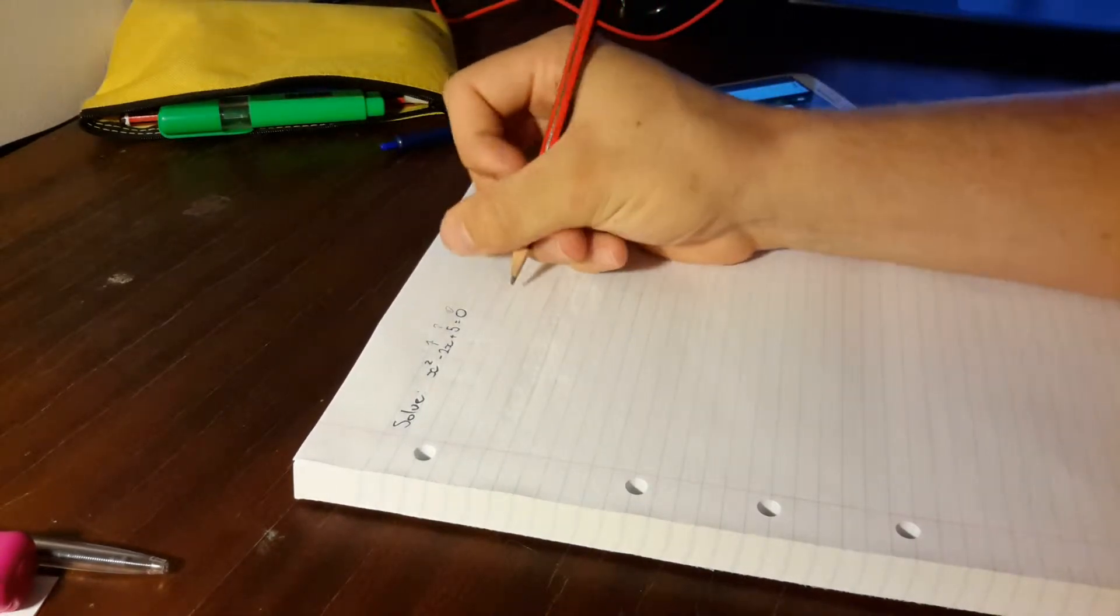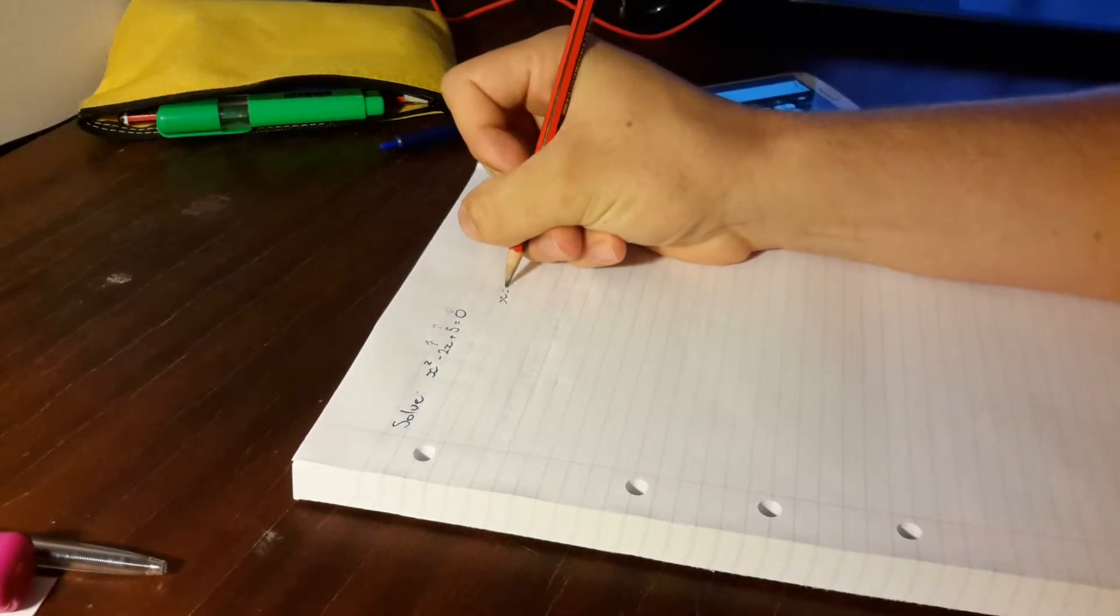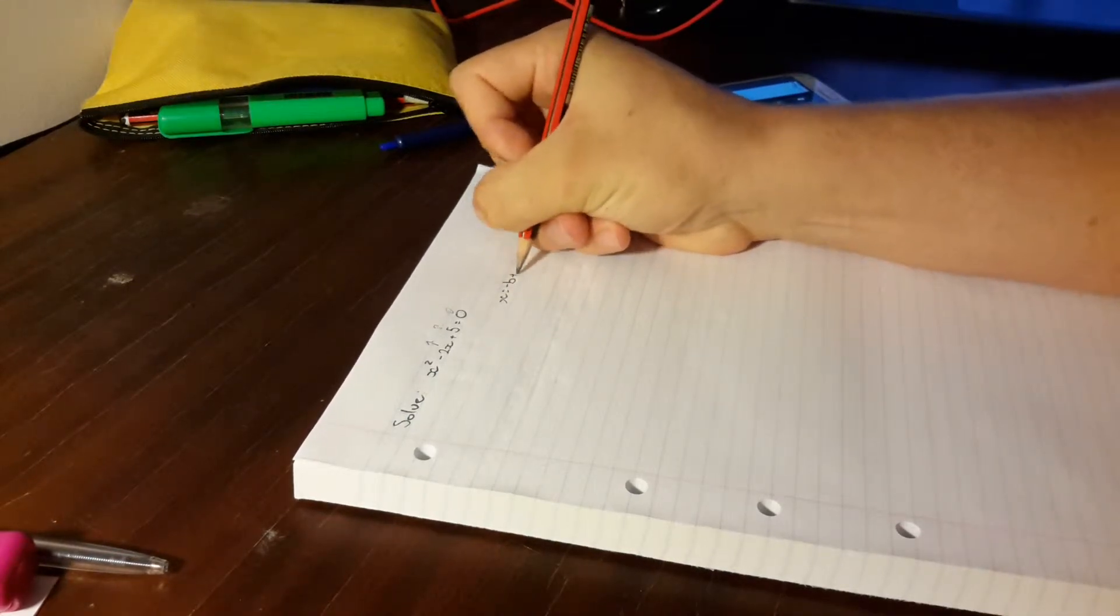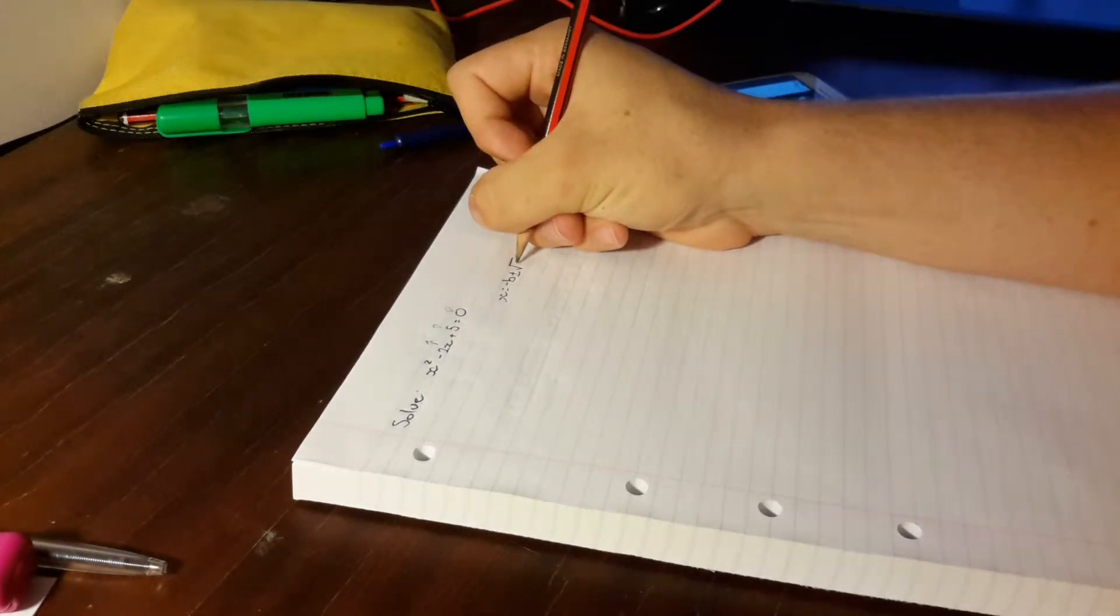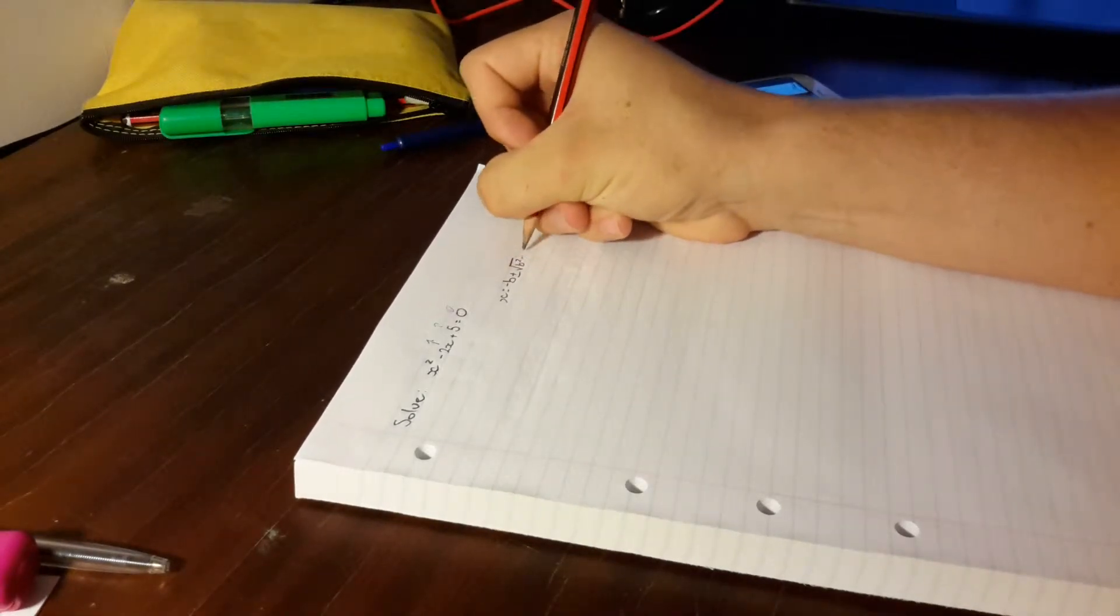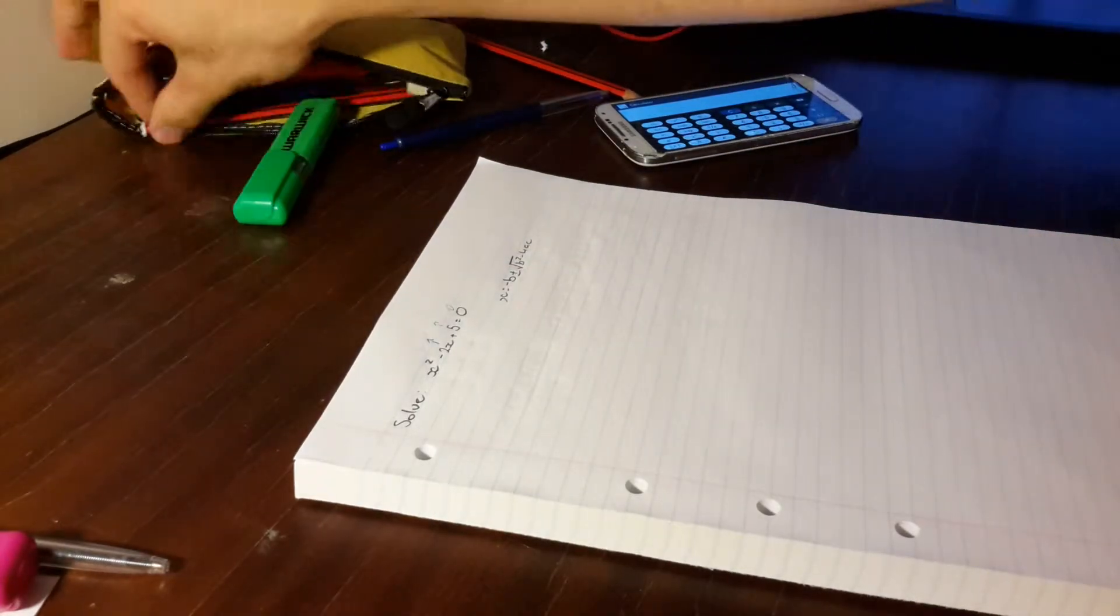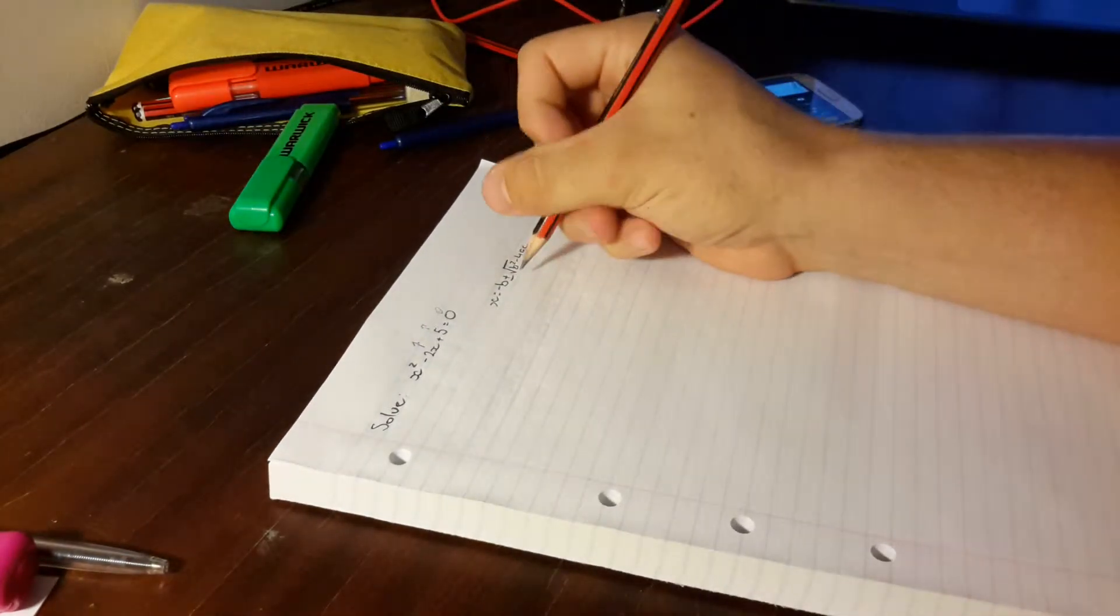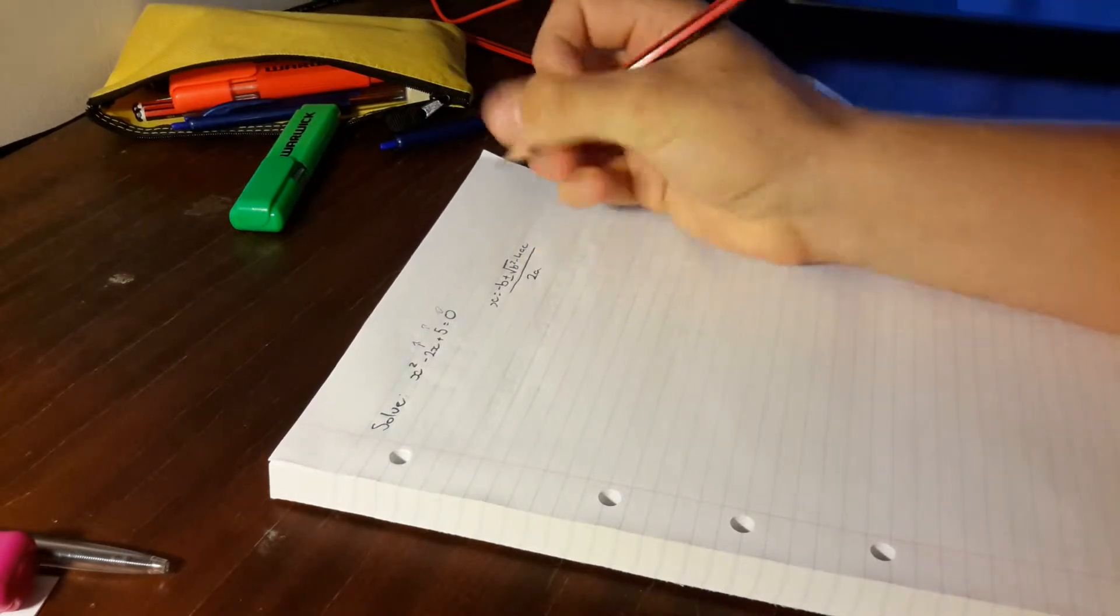We're going to be using the quadratic formula which is x equals minus b plus or minus the square root of b squared minus 4ac. I'll just grab another pencil. Over 2a.